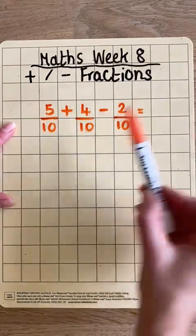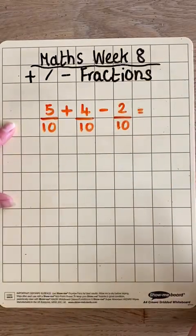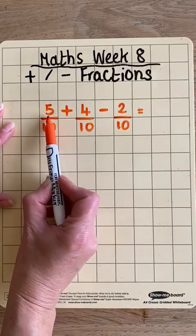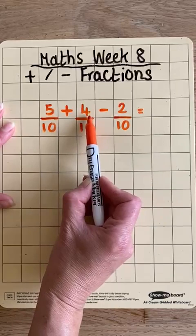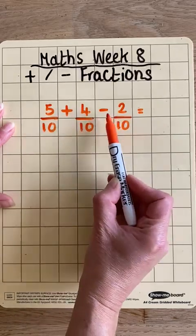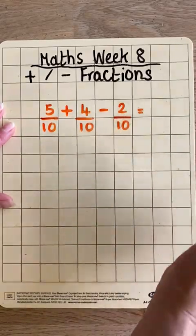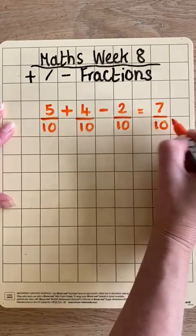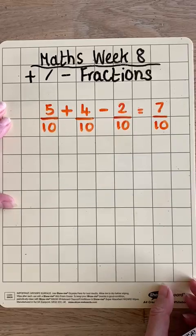In this example, where all my fractions are in tenths, all I need to do is 5 add 4 is 9, and then minus 2 is 7, and the denominator was 10, so my answer is 7 tenths.